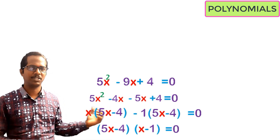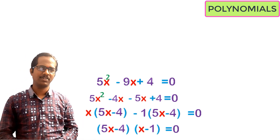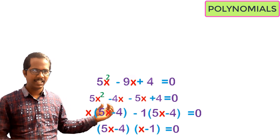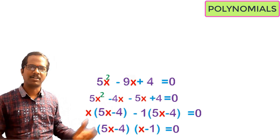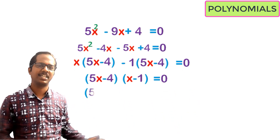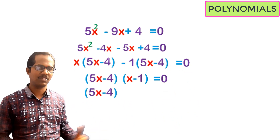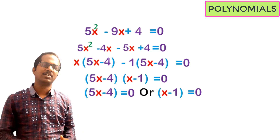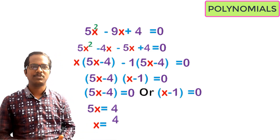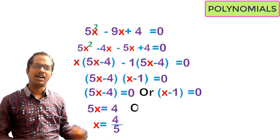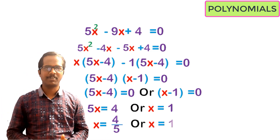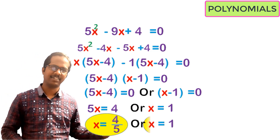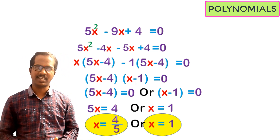So we get (5x - 4)(x - 1) = 0. Since the product equals zero, either linear factor must equal zero. Taking 5x - 4 = 0 or x - 1 = 0, and simplifying gives x = 4/5 or x = 1. So the two zeros of this quadratic polynomial are 4/5 and 1.